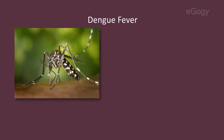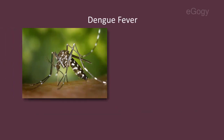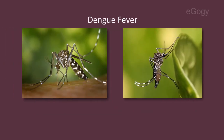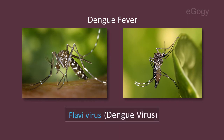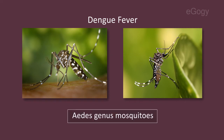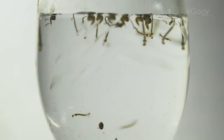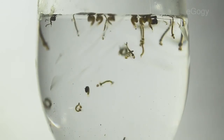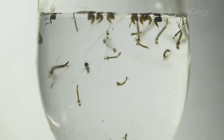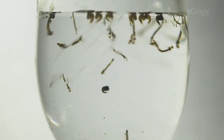Dengue fever is a viral disease caused by a flavivirus. It is transmitted to people by Aedes genus mosquitoes, which reproduce in stagnant water locations around habitations.